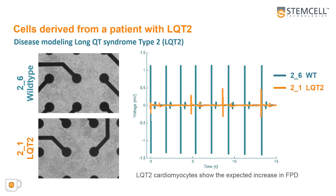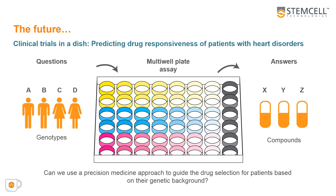During this webinar, we've shown that the long QT type 2 syndrome can be modeled using IPS lines that have different genotypes. The future of these clinical trials in a dish lends itself to experiments where one could predict drug responsiveness based on the patient's genotype. Therefore, we can use a precision medicine approach to guide drug selection for patients based on their genetic background.